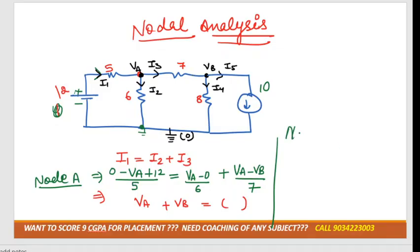Similarly, we have to apply KCL at node B. Now tell me the equation for node B. Which current is entering and which current is leaving? I3 is entering and I4 and I5 are leaving. Now tell me the value of I3 in terms of V by R. I3 is moving from Va to Vb, so it would be Va minus Vb divided by 7.